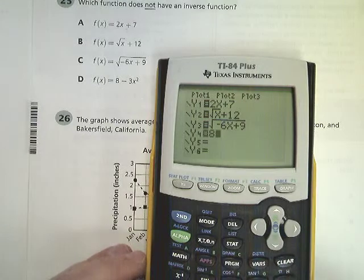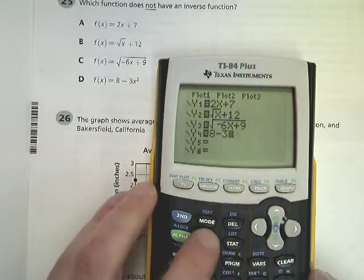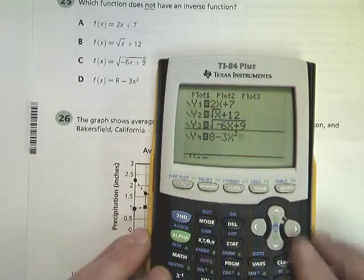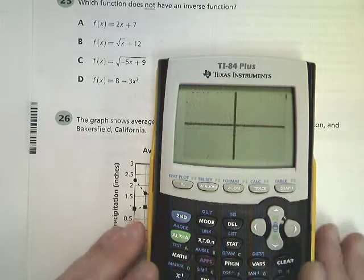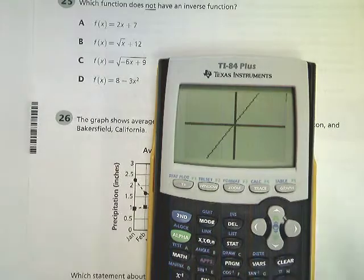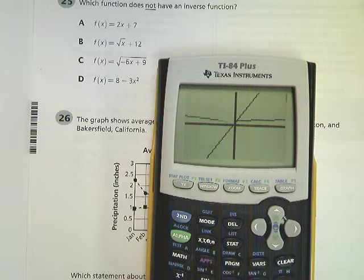Now, if it fails the horizontal line test, then that means its inverse is not a function. So I've got all this going for myself. I'm going to graph them all. There's the first one. Obviously passes the vertical line test. There's the second one. There's the third one. And there's the fourth one.